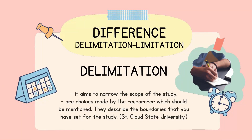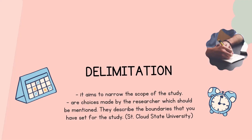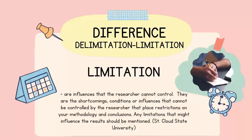Let us first differentiate delimitation from limitation. When we say delimitation, it aims to narrow the scope of the study. These are choices made by the researchers, and they describe the boundaries that the researchers set for the study. While limitations are the shortcomings, conditions, or influences that cannot be controlled by the researchers that place restrictions on your methodology and conclusions.